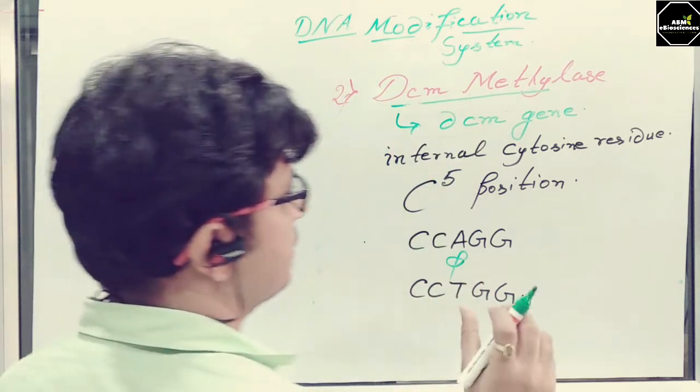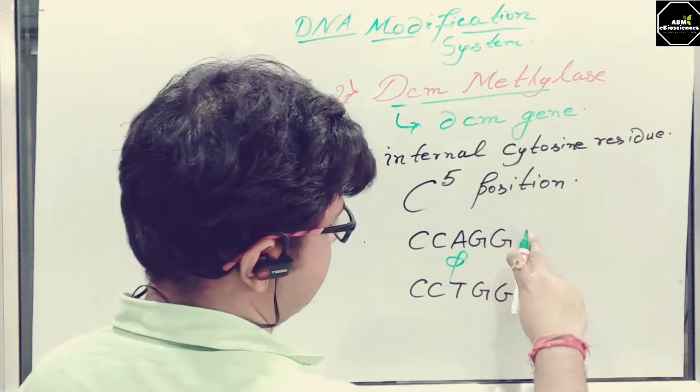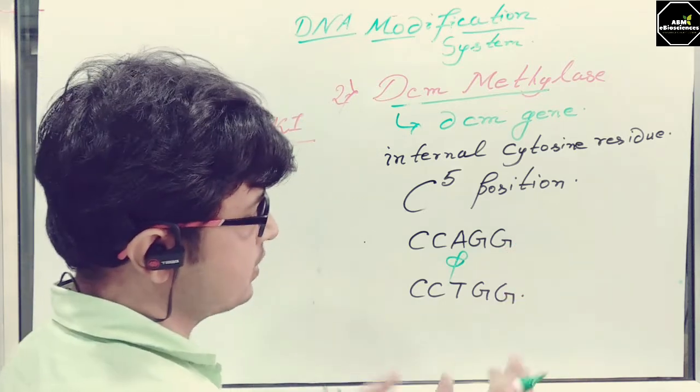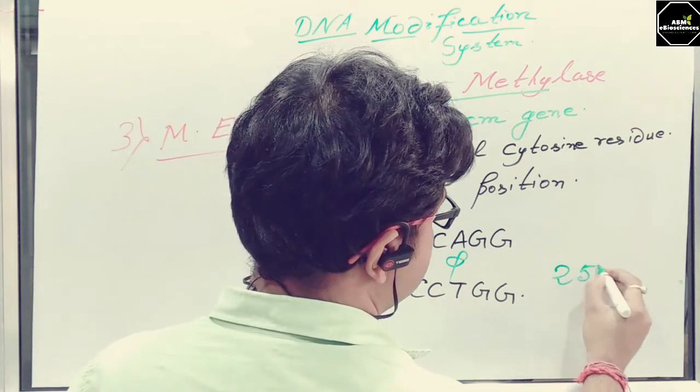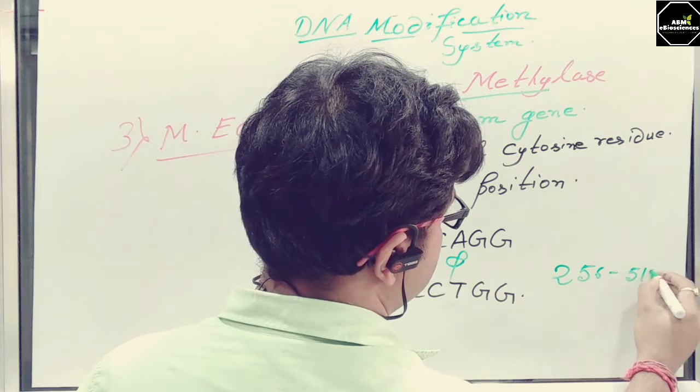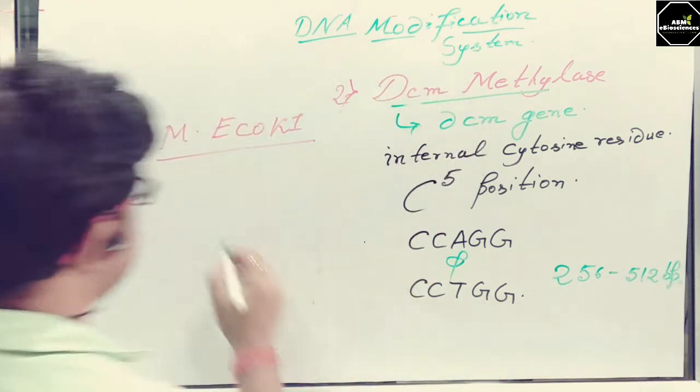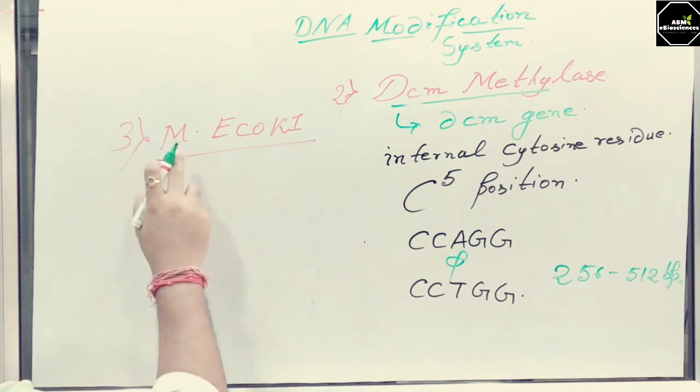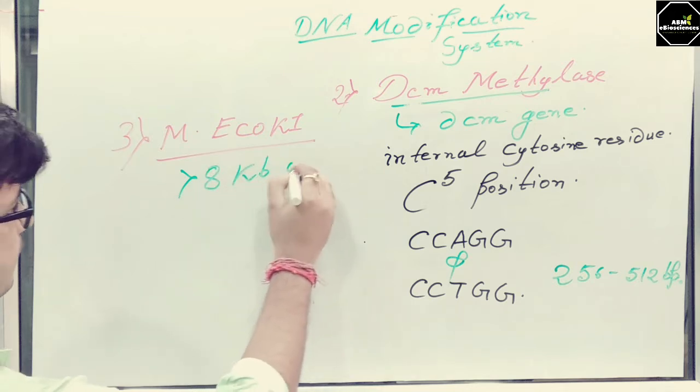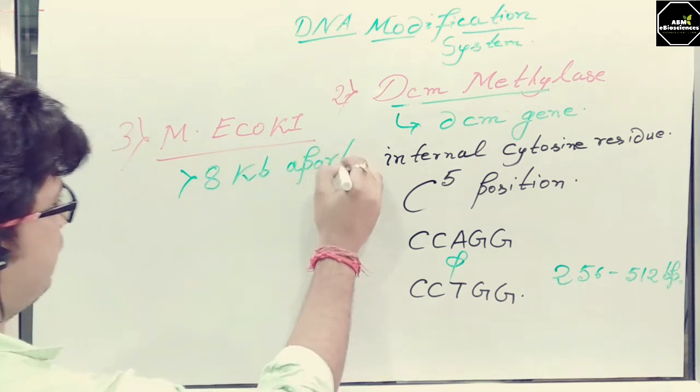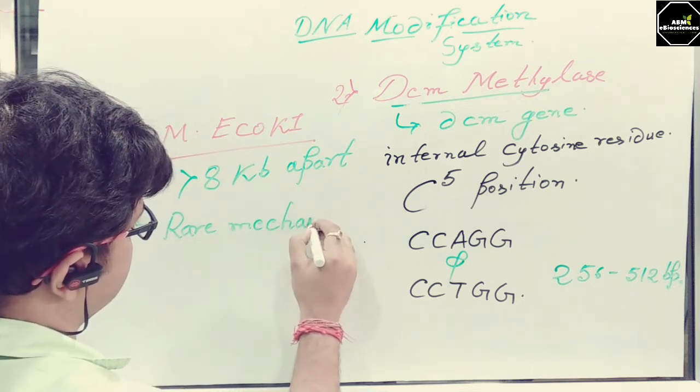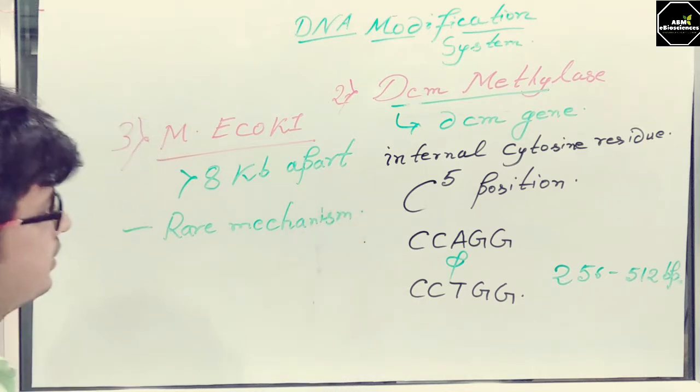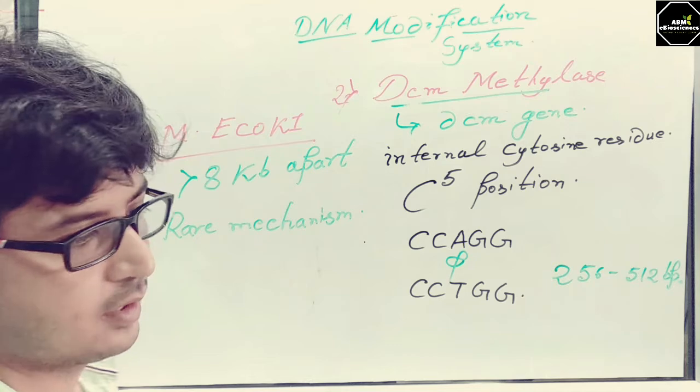In case of DCM, the presence of these methylase systems or methylated residues, the frequency of the sequence present inside the genome is around 256 to 512 BP. Whereas, in case of M-eco-PA1, the methylase system is present more than 8 KB apart. It is a very rare mechanism or the rare enzyme present inside the bacteria.